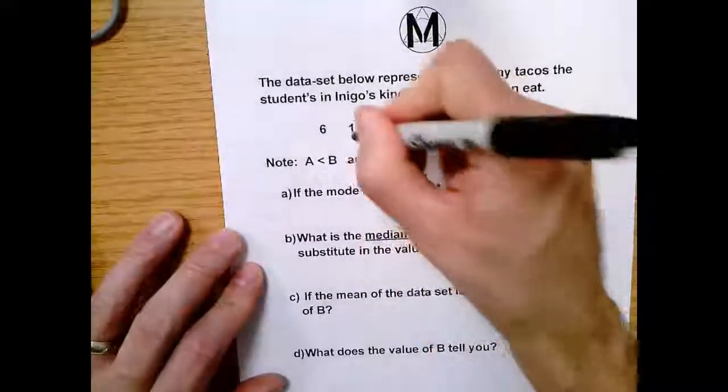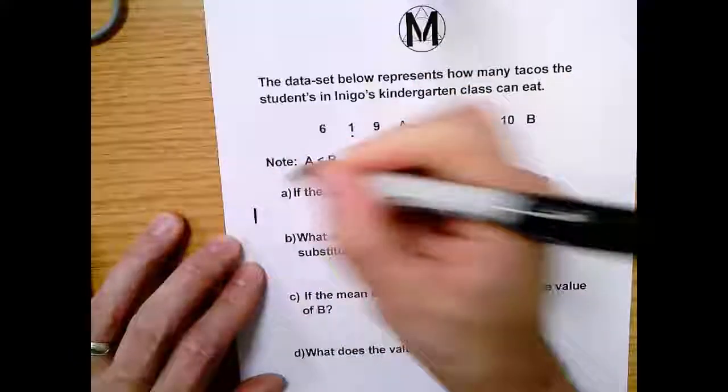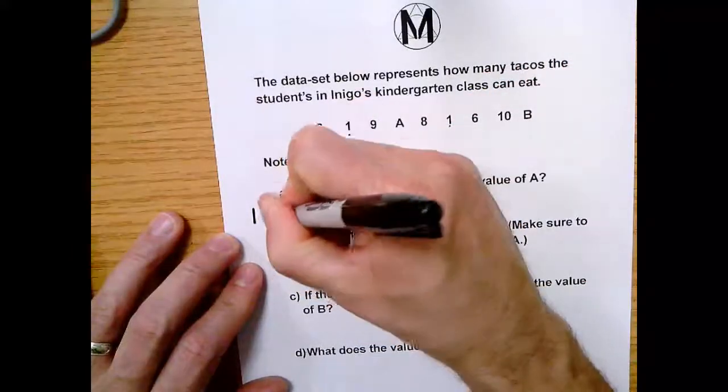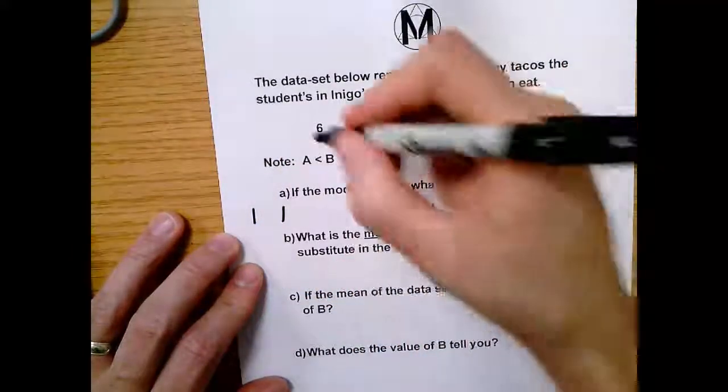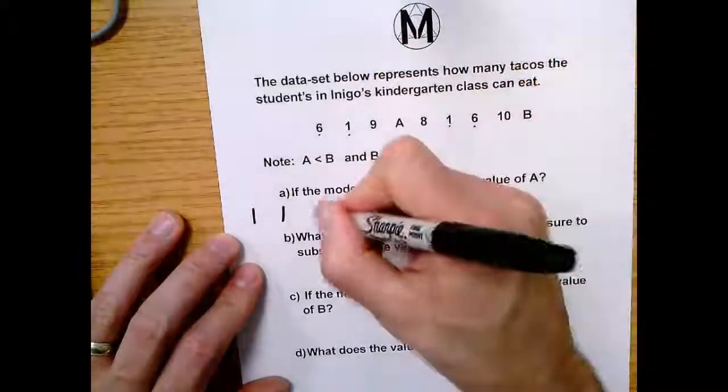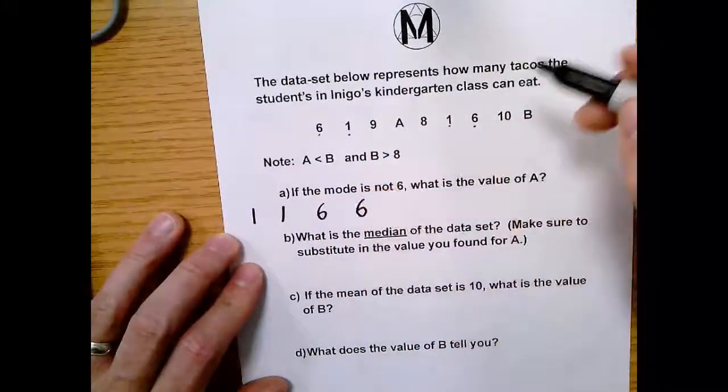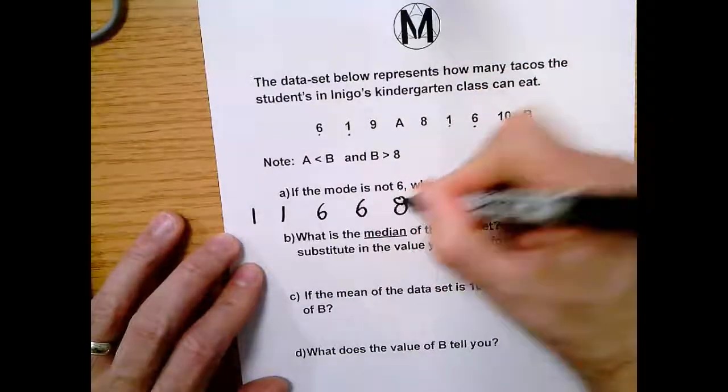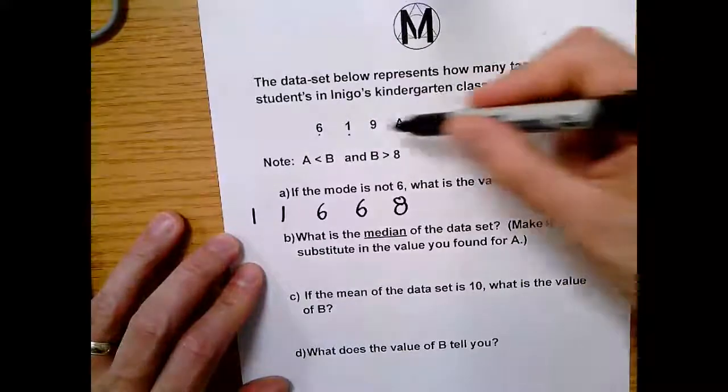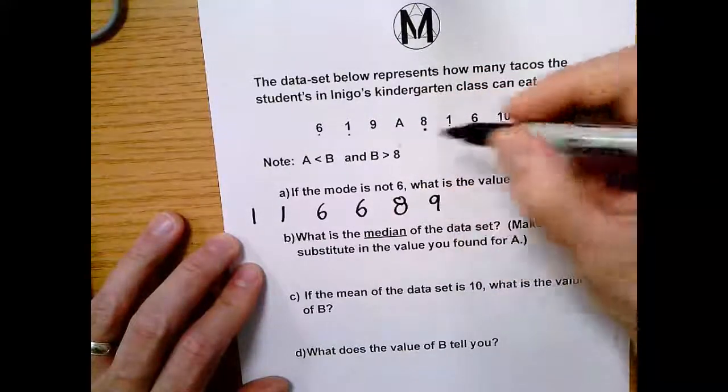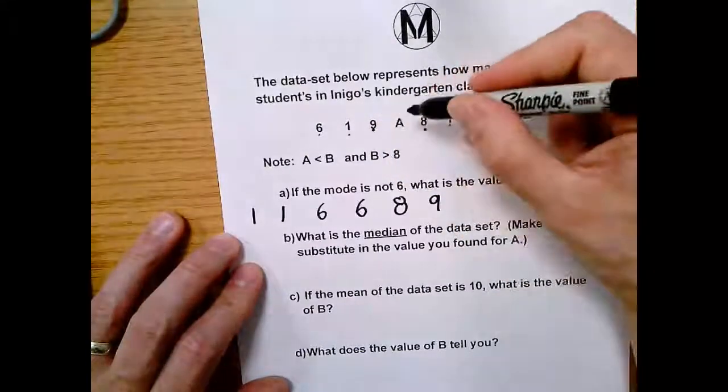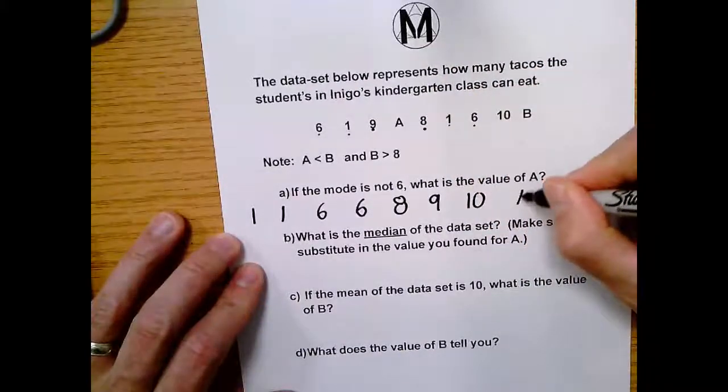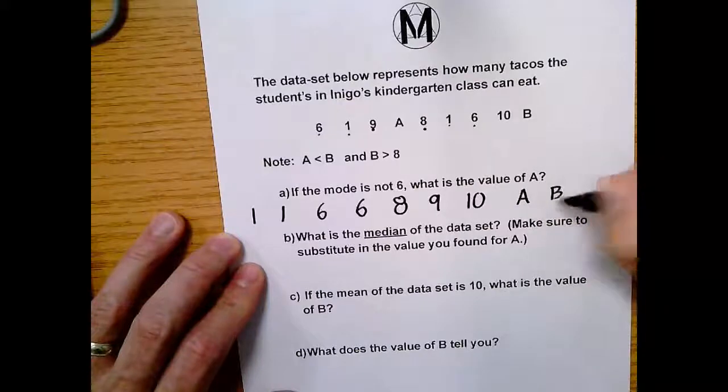So my first number I write is one. I usually put a dot underneath them just so I remember that I used them. I have another one right here. Let's see, one, and we got a six, and a six. Okie dokie. We got a one, one, a six, a six. What's next? Eight. And then nine. And then ten. And then we have an A, and we have a B. That's what we know.